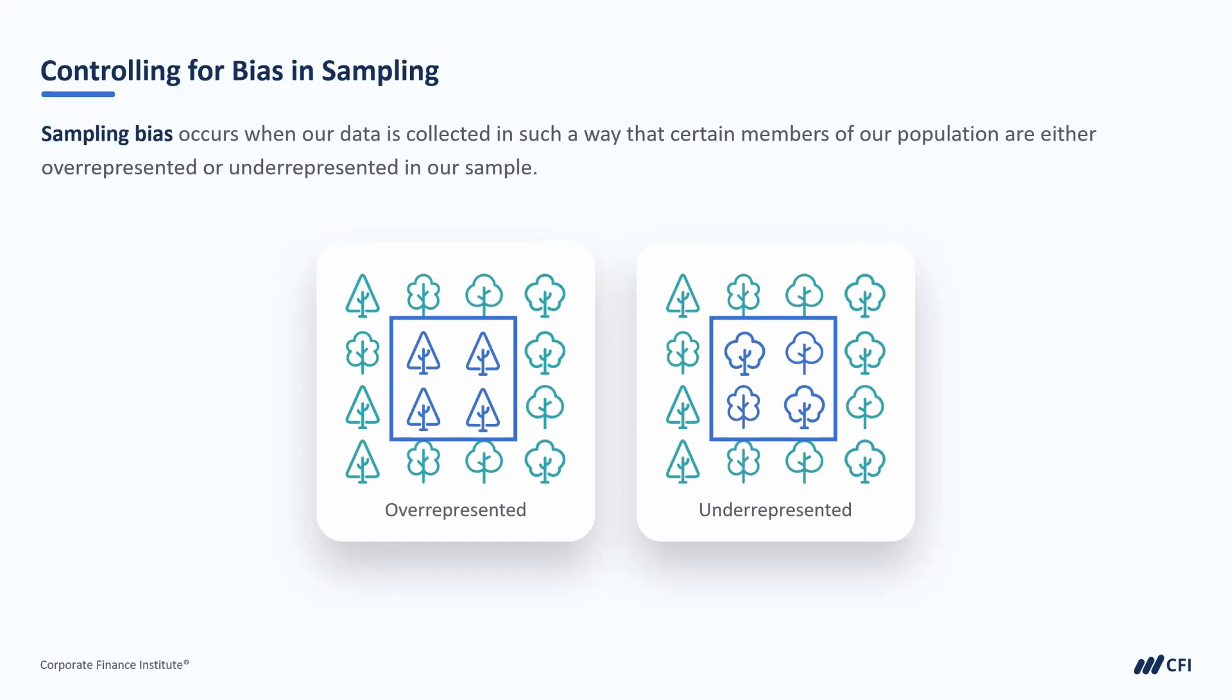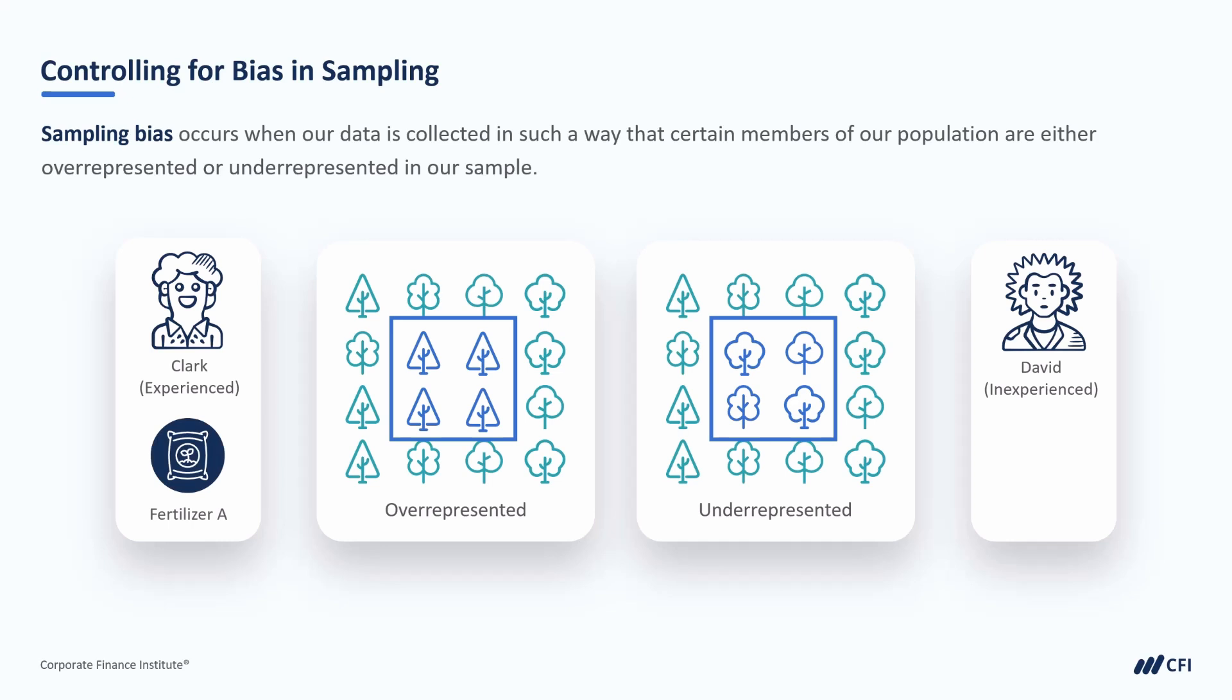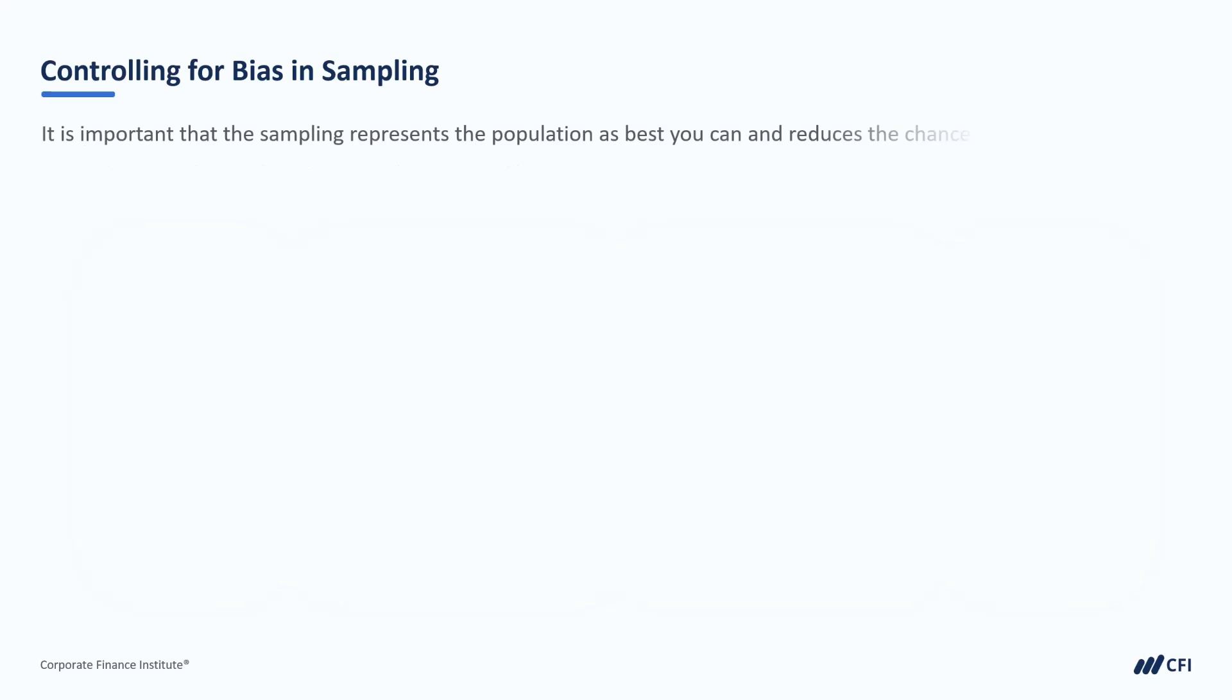For our fertilized tree saplings, imagine we have workers helping us plant the trees and apply the fertilizer. Let's call them Clark and David. Clark has been planting and fertilizing trees for years, and knows how to do it properly. David is just starting out, and is still learning on the job. Because of this, David's trees are less likely to be planted and fertilized properly, and this could affect their survival rate. Now imagine that we have Clark plant all of the trees and use fertilizer A, and that David plants all of the trees that use fertilizer B. Do you see how this could be an issue? When collecting our samples, it is important to do so in such a way that it represents the population as best as we can, and reduces the chance of bias.